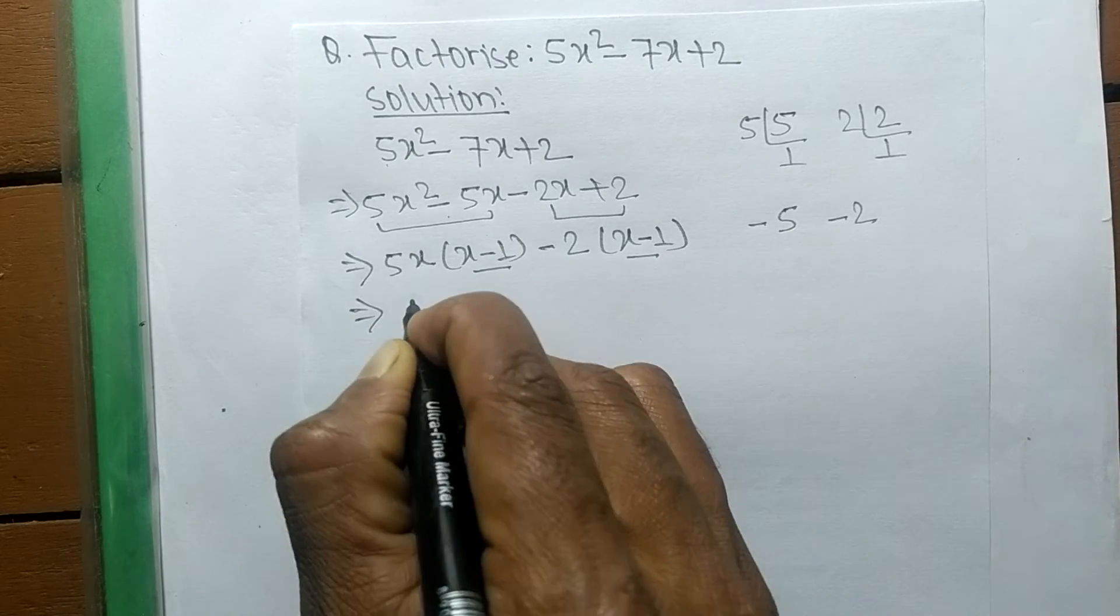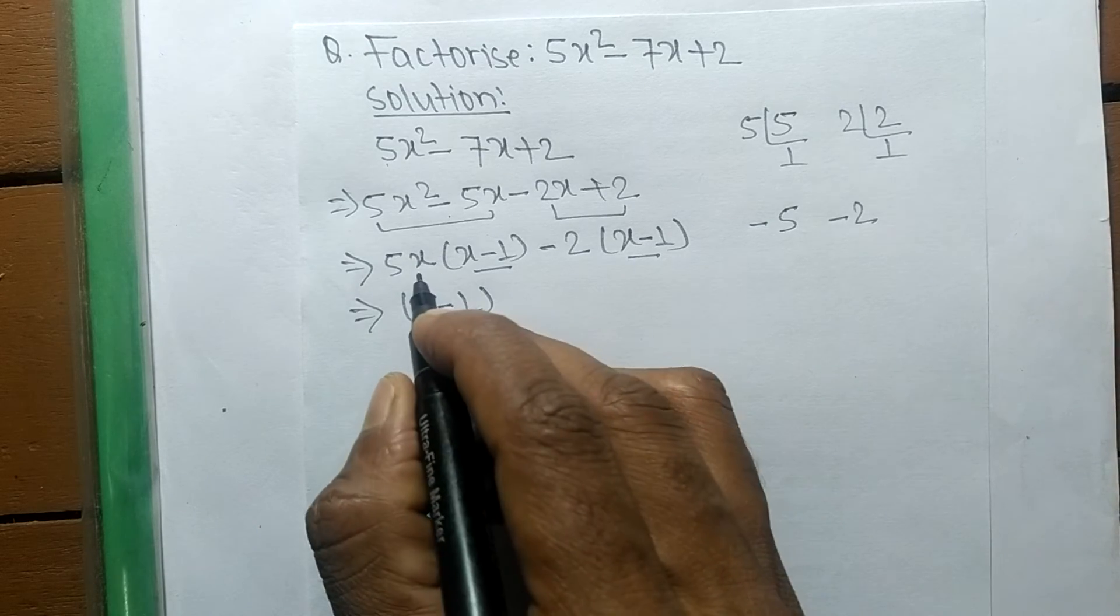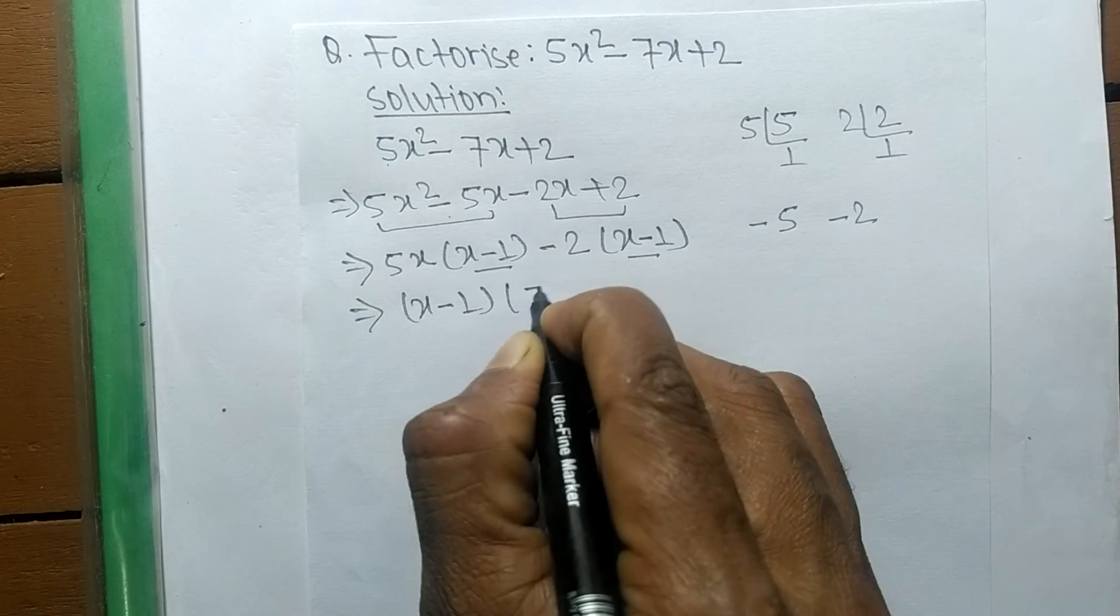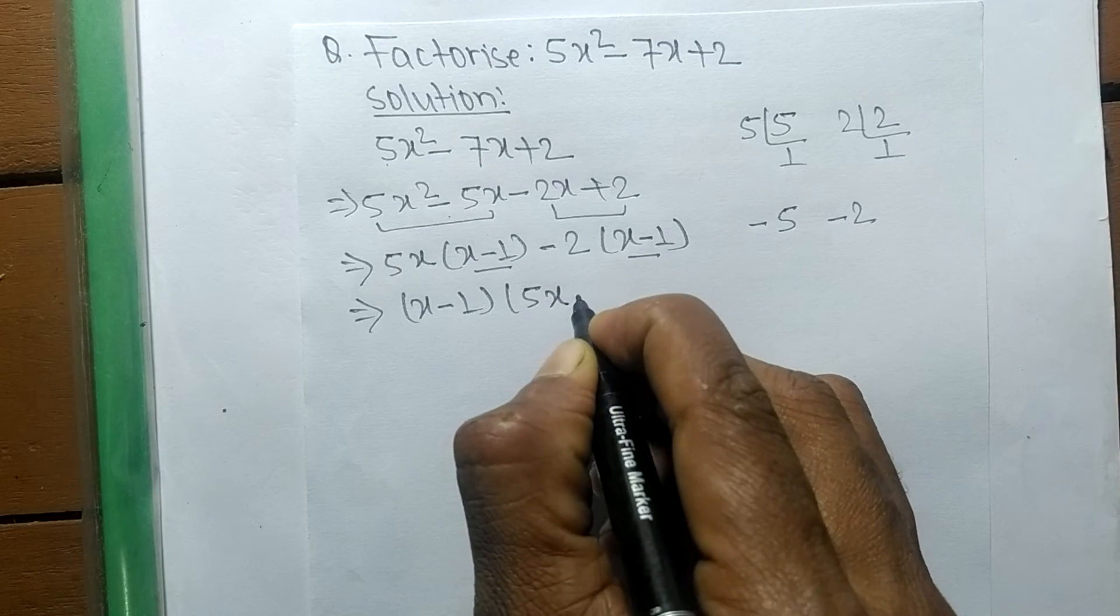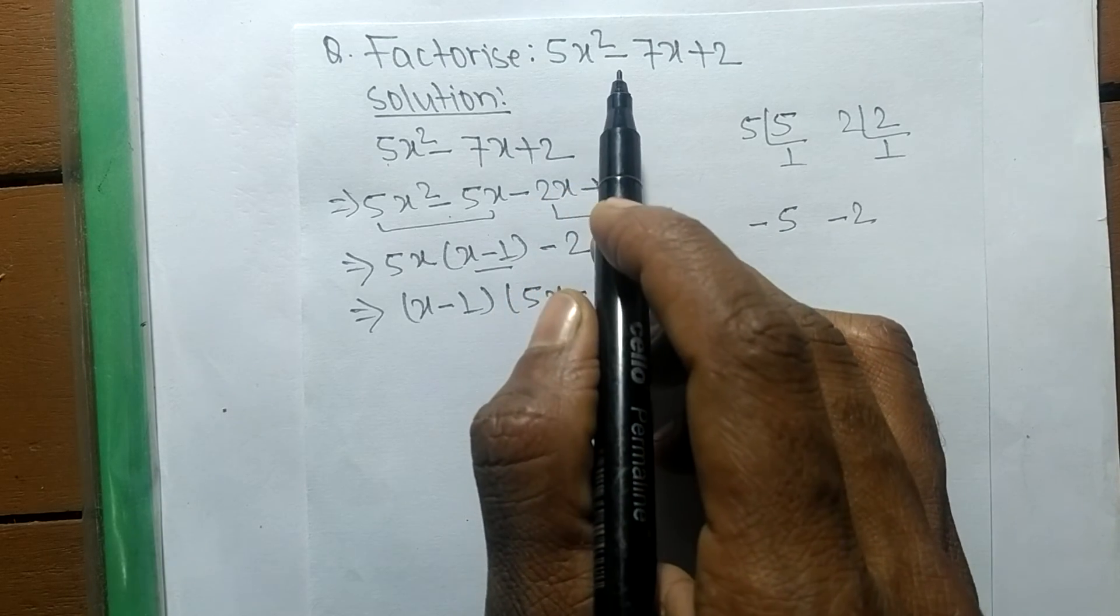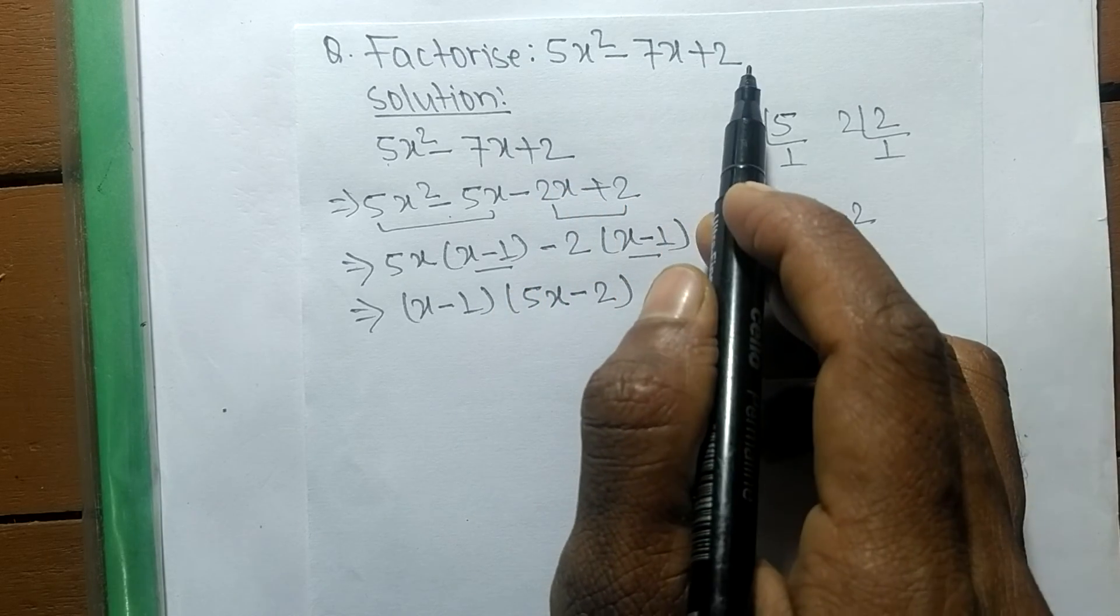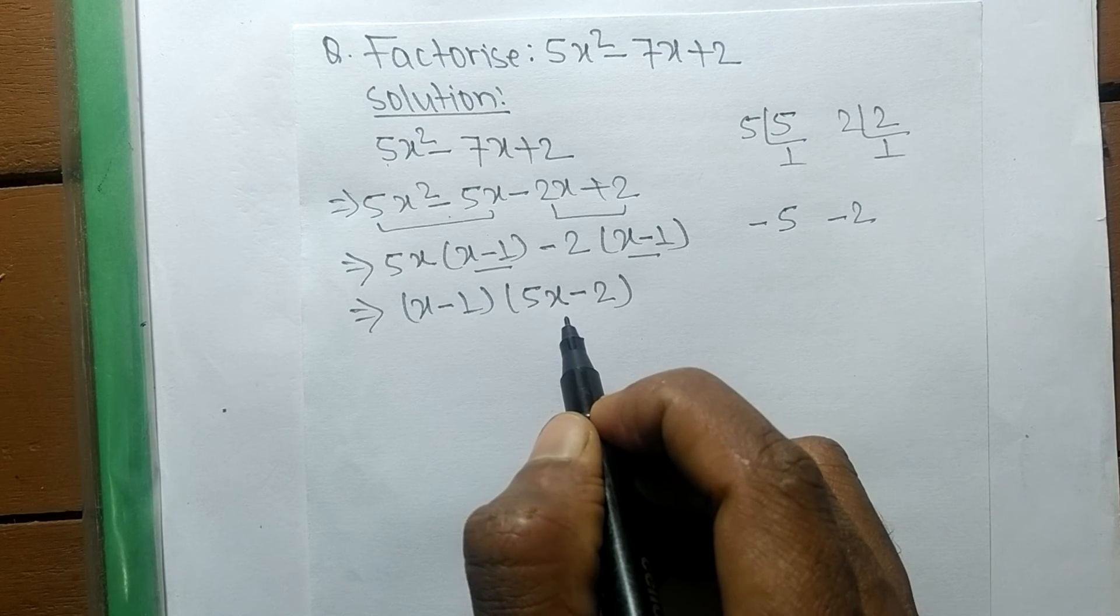So now again we take common here x minus 1. The remaining part in the first expression is 5x, and in the second one the remaining is minus 2. So the factors of 5x squared minus 7x plus 2 is x minus 1 and 5x minus 2.